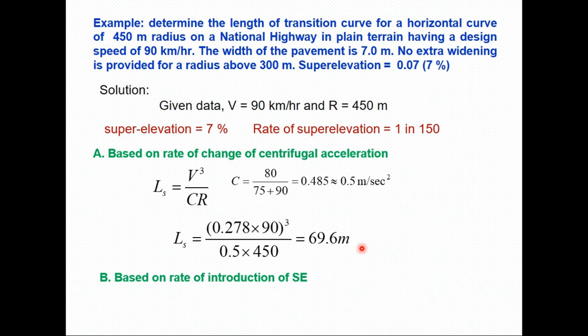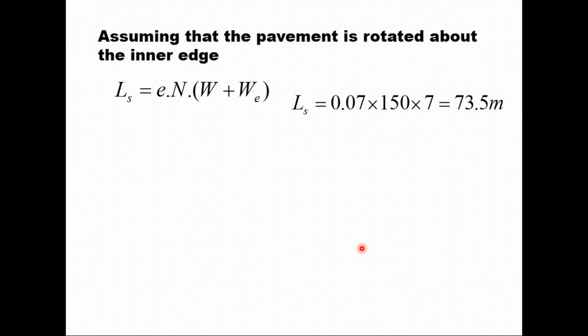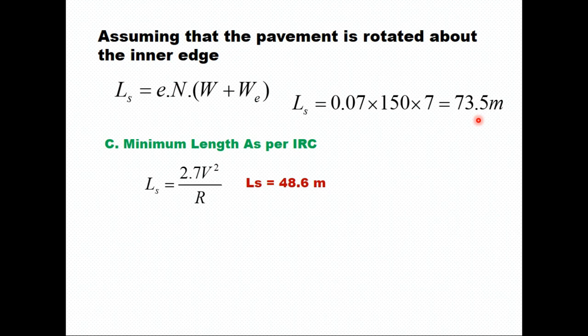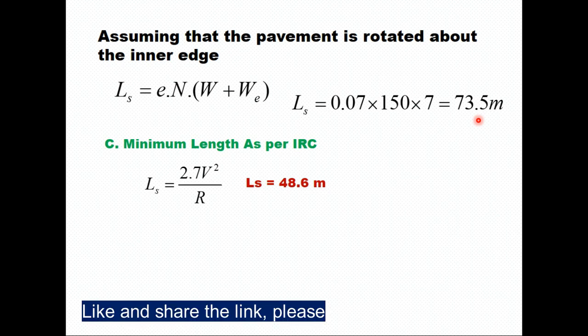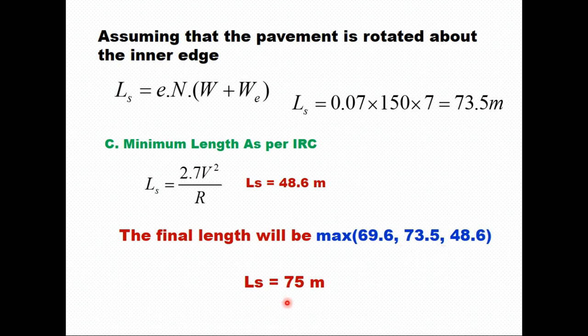The second criterion is based on rate of introduction of super elevation. Here e = 0.07, W = 7 m, W_e = 0 (no extra widening), and n = 150. Assuming rotation about the inner edge: Ls = e × n × (W + W_e) = 0.07 × 150 × 7 = 73.5 m. The IRC minimum length for plain terrain is 2.7v² / R = 2.7 × 90² / 450 = 48.6 m. The actual length to be provided is the maximum of 69.6 m, 73.5 m, and 48.6 m — therefore 73.5 m, say 75 m. That is how the length of transition curve is estimated.